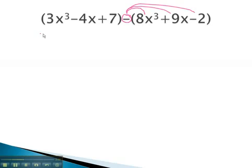The first polynomial, remaining the same, is 3x cubed minus 4x plus 7. As we distribute the negative, we get negative 8x cubed minus 9x plus 2.